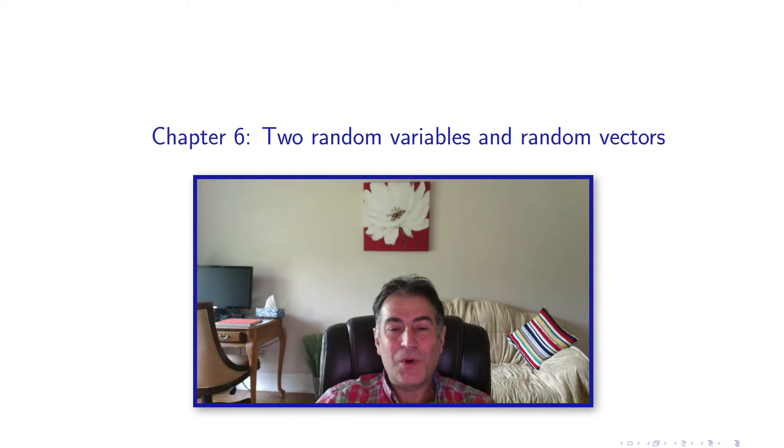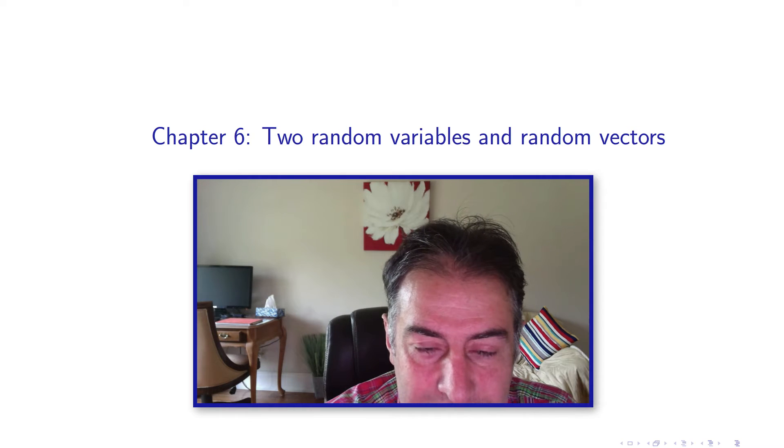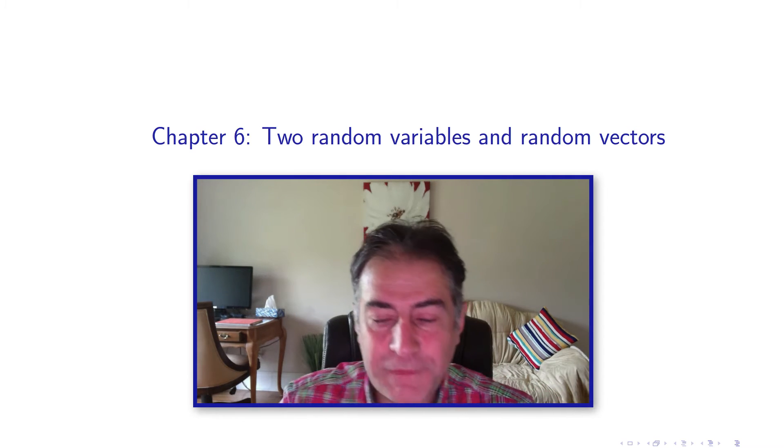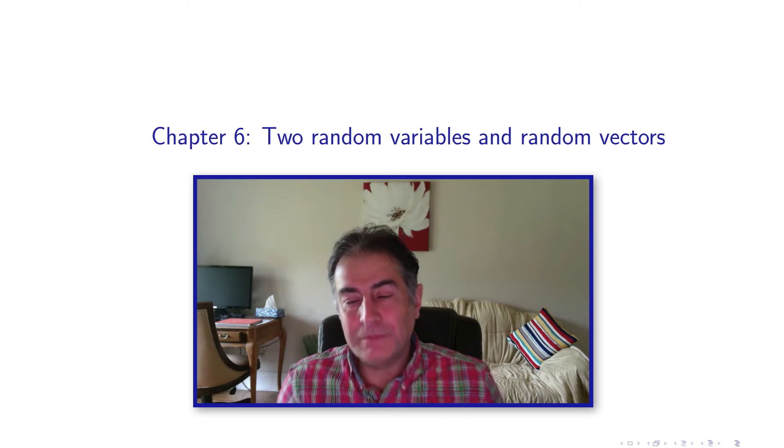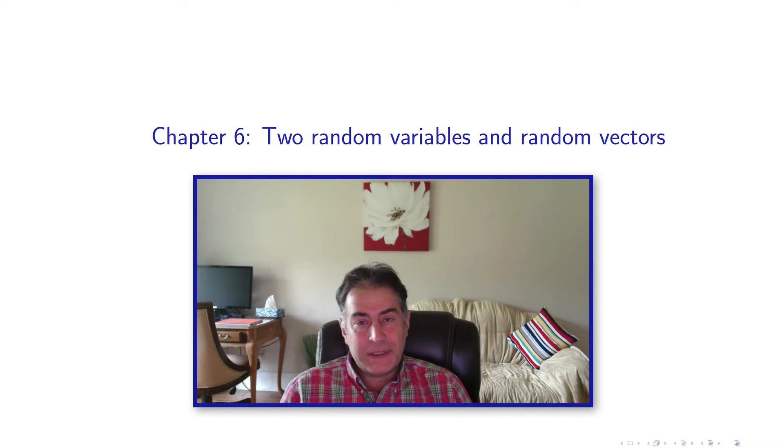Hello again. So far we have learned and defined a probability space, a triplet, and then defined a random variable—one single random variable over a probability space.